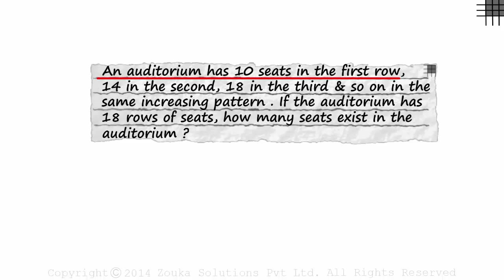An auditorium has 10 seats in the first row, 14 in the second, 18 in the third and so on. The auditorium has a total of 18 rows. How many seats are there in total?